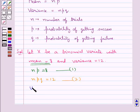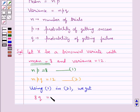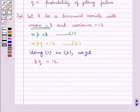Using equation 1 in equation 2, we get 8q = 12. From here we get q = 12/8. Since 4×2 = 8 and 4×3 = 12, we get q = 3/2, which is greater than 1.